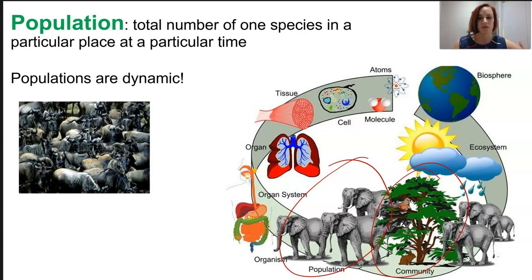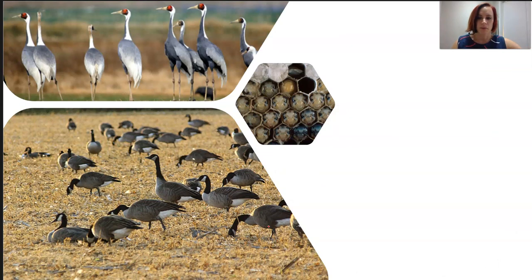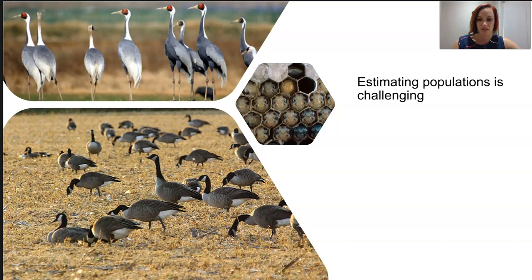Sometimes populations include really large numbers of herd animals, and sometimes it can just be lots of individualistic animals that sort of lurk around together. Knowing a population size can assist scientists to understand the habits of organisms, whether certain populations are thriving or just surviving, or whether they're vulnerable to extinction and need conservation efforts.